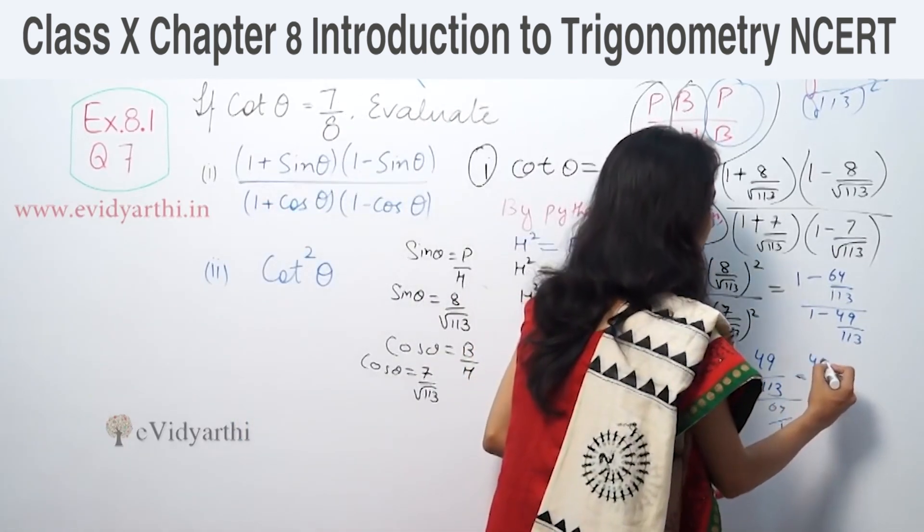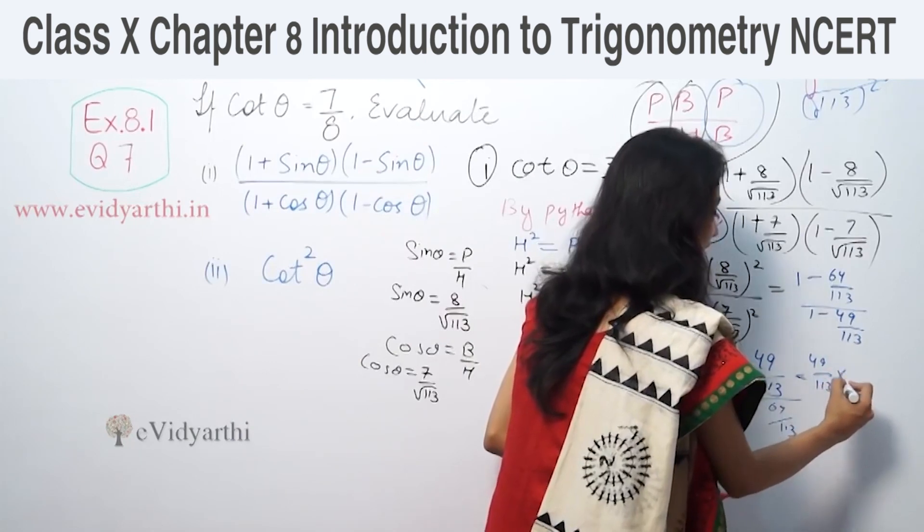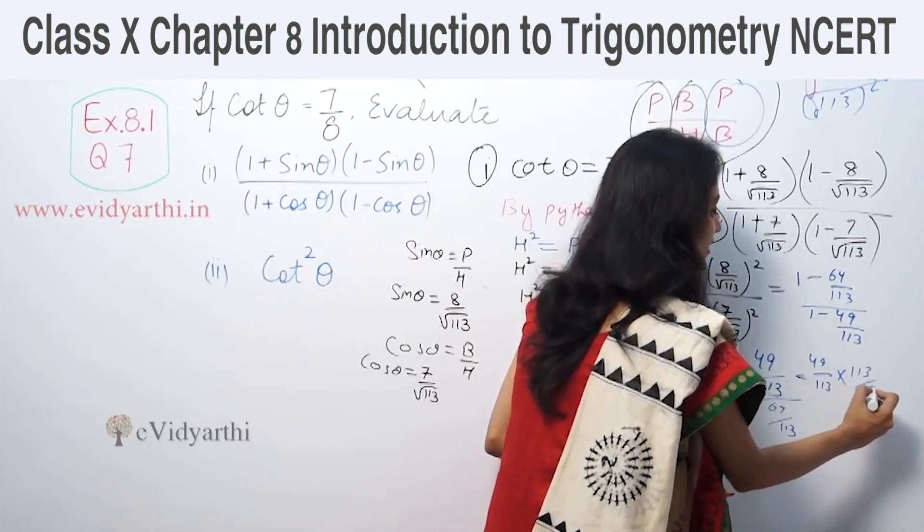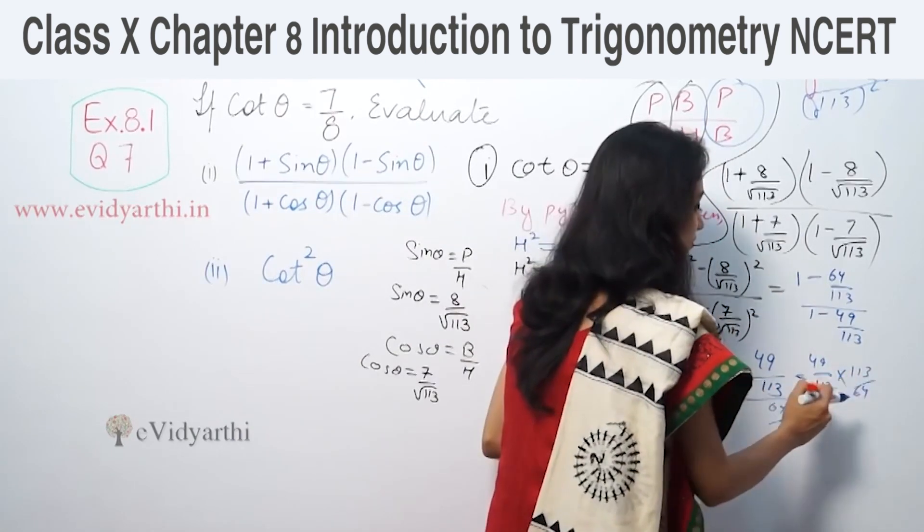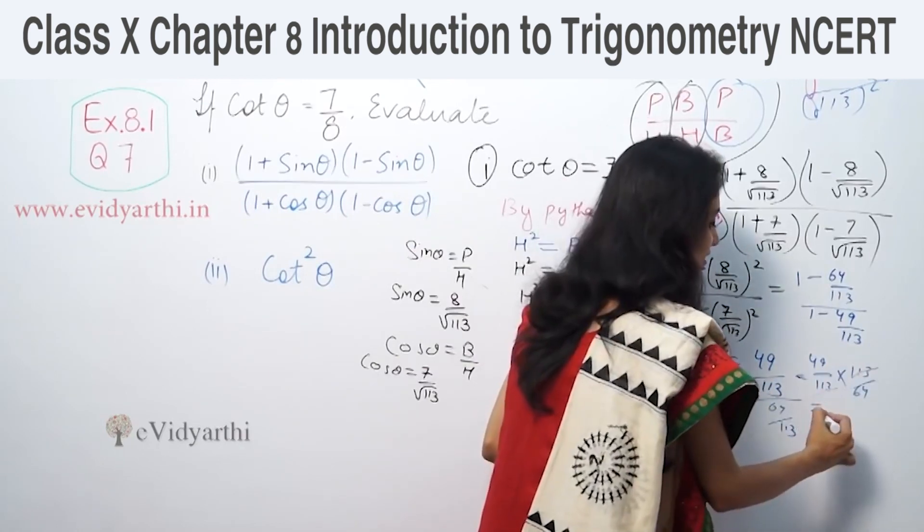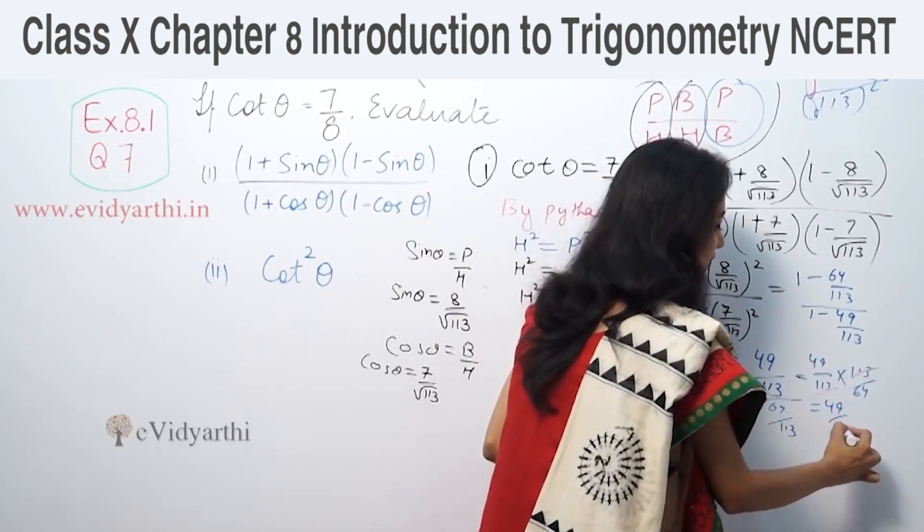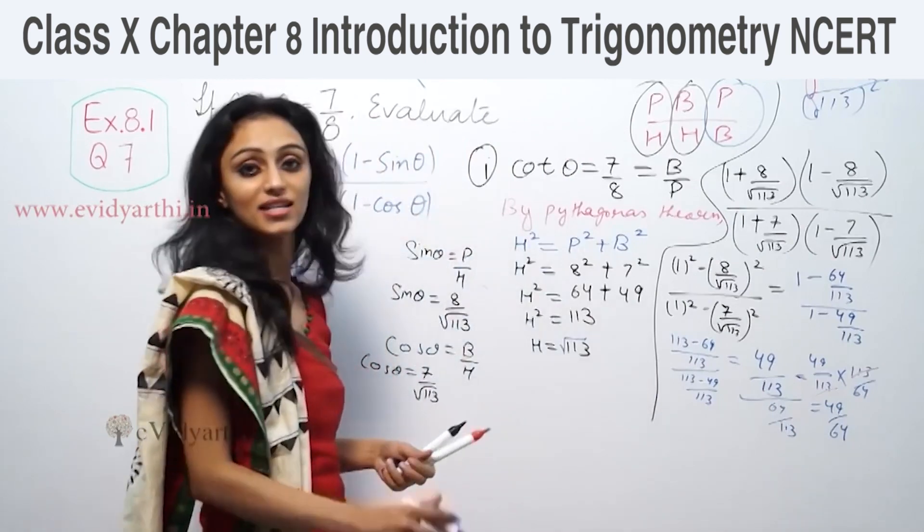Similarly, we get 113 minus 49, which is 64 upon 113. So we get 49 upon 113 times 113 upon 64. The 113s cancel, giving us the answer: 49 upon 64.